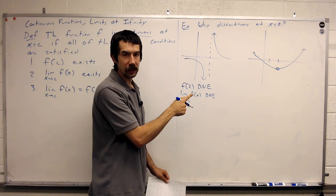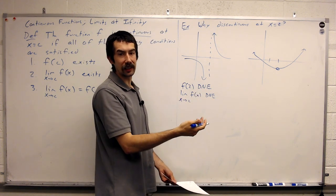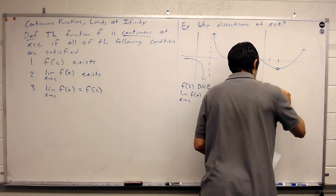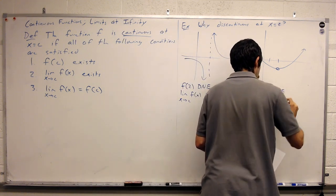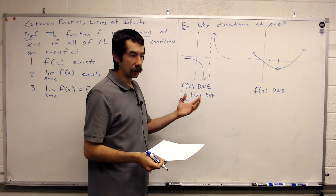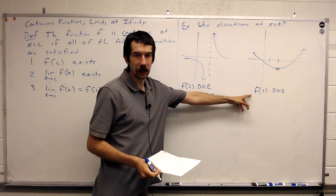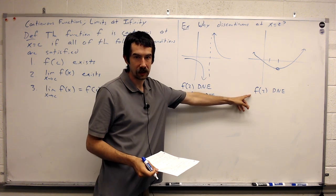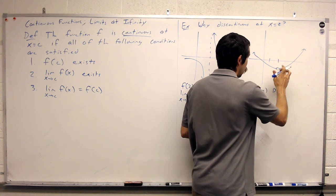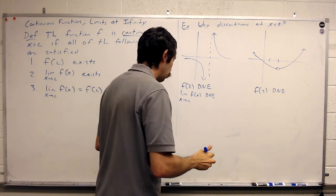Let's look at another one. Why is this function discontinuous at x equals 2? Well, f of 2 does not exist, so it fails condition 1. The limit exists, but the function's value does not exist. There's a hole in the graph.